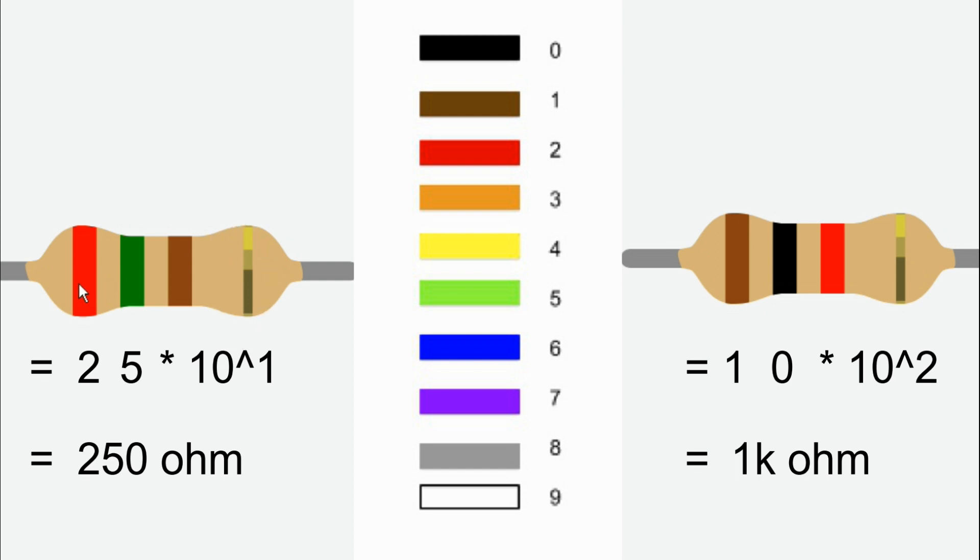Red is 2, green is 5, brown is 10 power 1, so 250. But if the tolerance band is not present, the tolerance is 20%. Gold color is 5% tolerance, silver color is 10% tolerance.